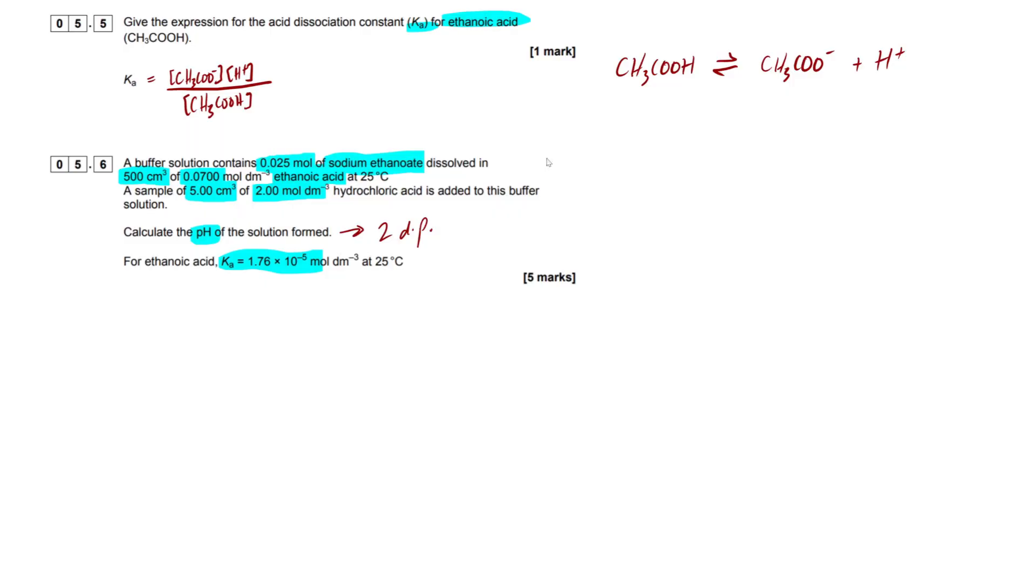So what we're going to do first is just look at our mols involved. This is the first stage to any sort of calculation question in titrations, buffers, amount of substance. Normally, your first call is going to be mols. So molar equation - mols equals CV, concentration times volume. We're given a ton of variables in this question, so just make a note of which reagent has which variables given. First off, I'm going to start with our ethanoic acid because we're given both the volume right here and the concentration. So our mols of ethanoic acid equals our concentration, so 0.07 multiplied by our volume, which is 500.